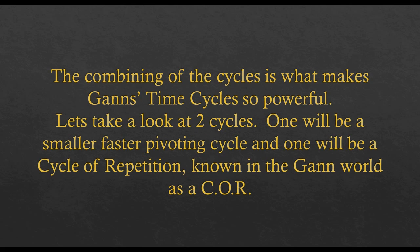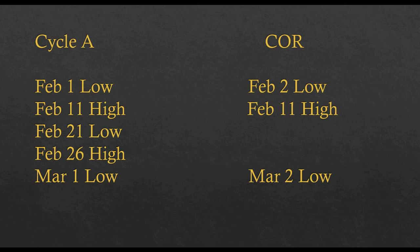There are a lot of technical indicator systems out there, but this is far beyond any of that. The combining of cycles is what makes Gann's time cycles so powerful. Let's look at two cycles: one will be a smaller, faster pivoting cycle, and one will be a cycle repetition known in the Gann world as a COR — cycle repetition cycle.